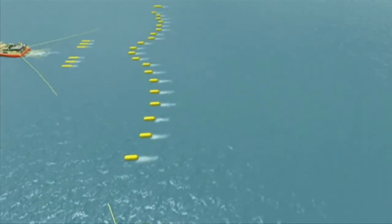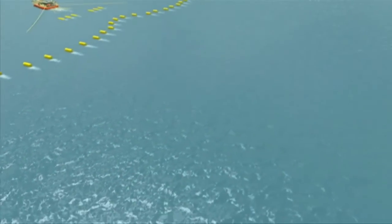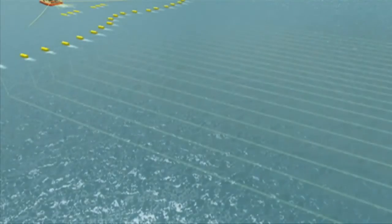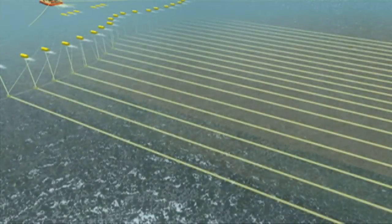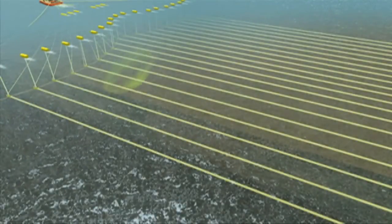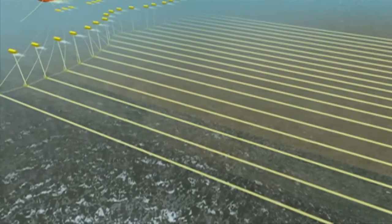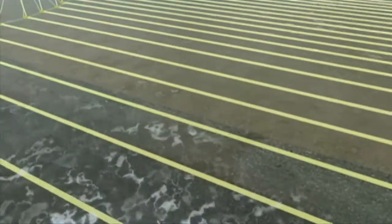During a survey, the air gun arrays generate an acoustic pulse that penetrates the subsurface. The simultaneous recording from the co-located pressure and particle velocity sensors allows the sea surface ghost reflection to be eliminated, and so delivers enhanced resolution.